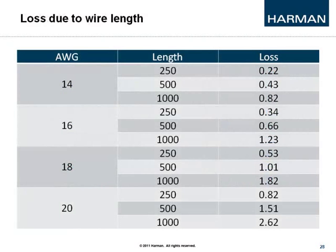Regarding loss due to wire length, here are some standard rules of thumb for various American wire gauges. A 14-gauge wire at a 250-foot run loses about 0.22 dB — probably not audible. A 20-gauge wire at 250 feet loses about 0.82 dB — maybe audible. At 1,000 feet on 20-gauge wire, you lose 2.62 dB — nearly half your power just from the cable. Keep cable lengths in mind, but most projects stay under 250 feet, and that small loss is typically what headroom is for.